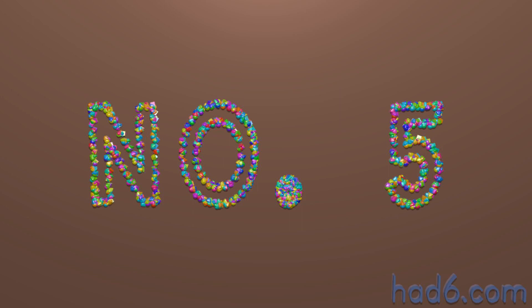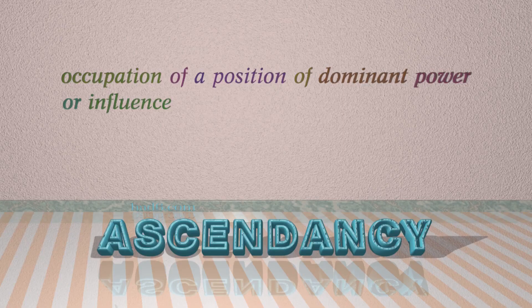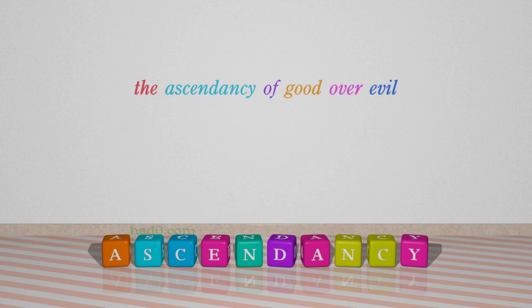Number 5: Ascendancy. Which means occupation of a position of dominant power or influence. For example: The ascendancy of good over evil.